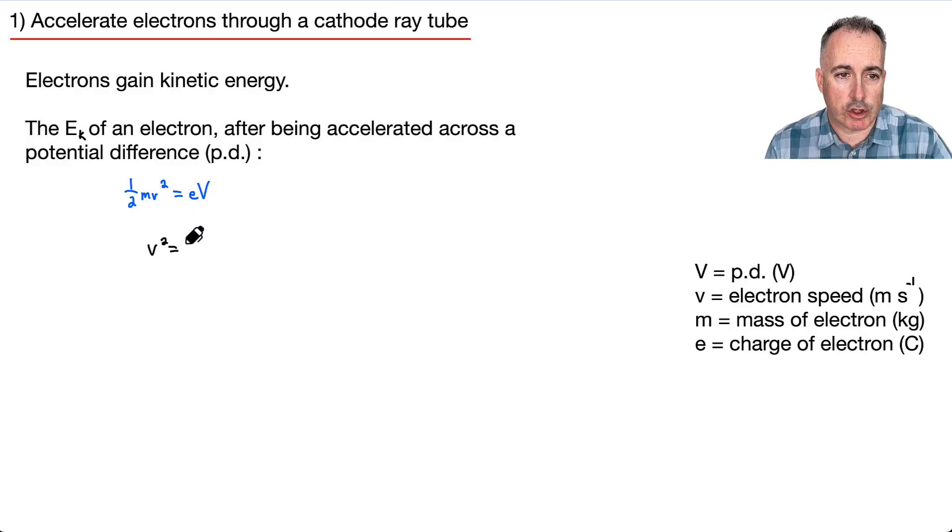We'll move the 2 over and divide by m. So that means V squared equals 2 times e times capital V. Remember, these are two different V's. Lowercase v is the speed, uppercase V is the potential difference, and I'm dividing by m, the mass. Then I'll take the square root, so v equals the square root of 2eV over m. I'll designate that equation 1.